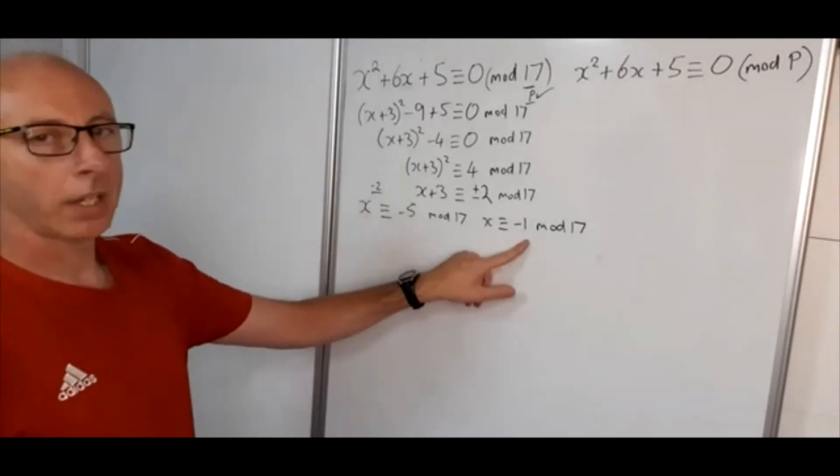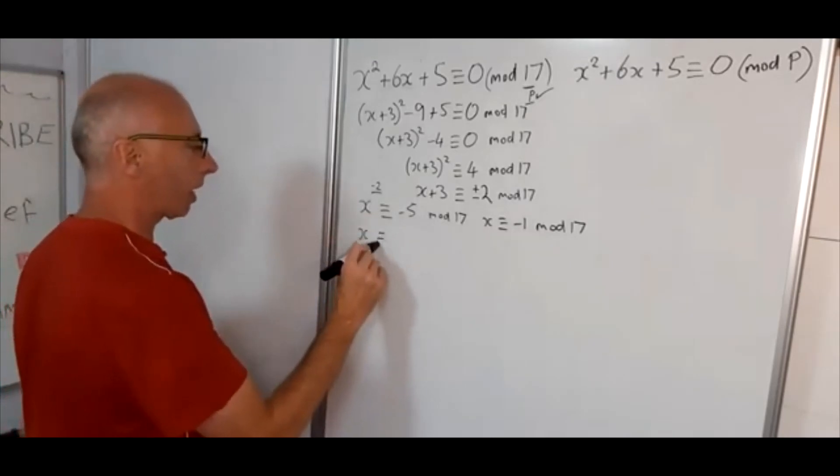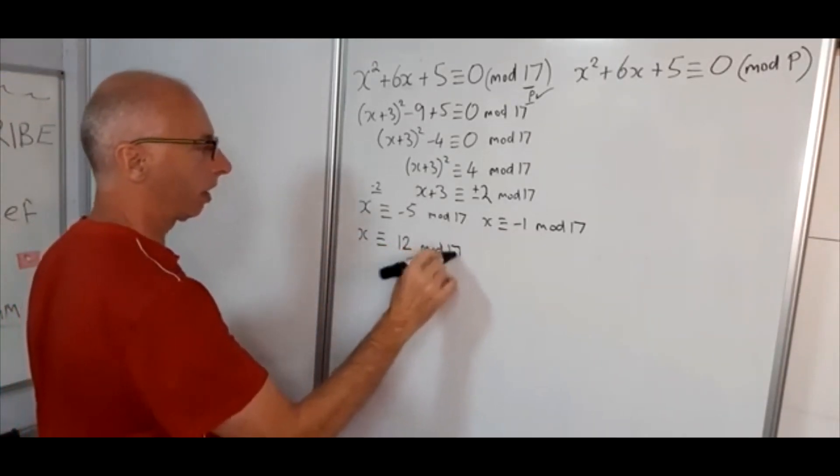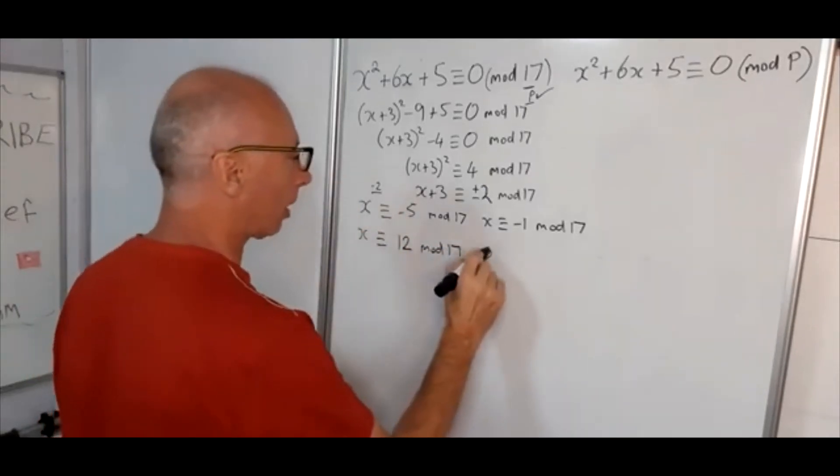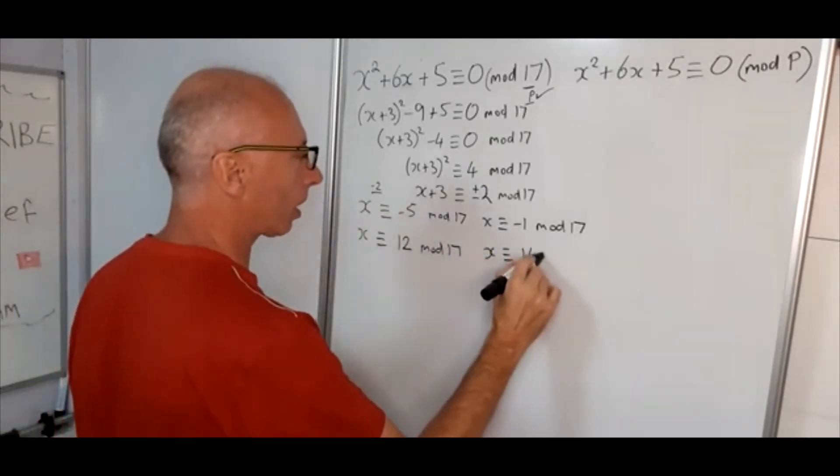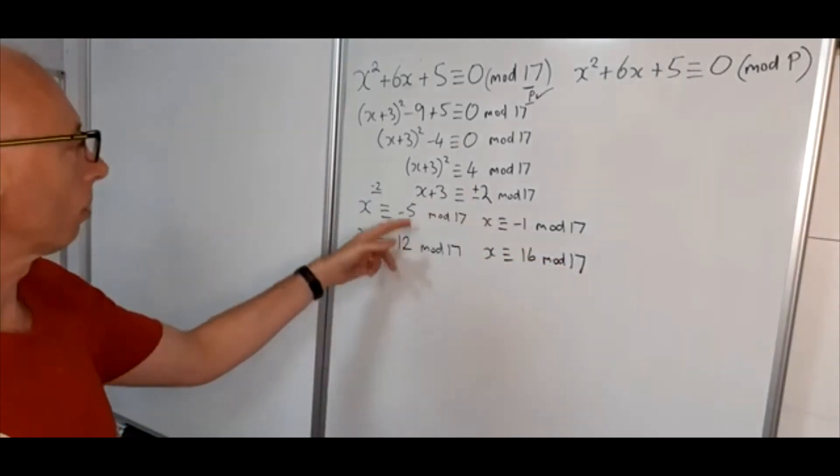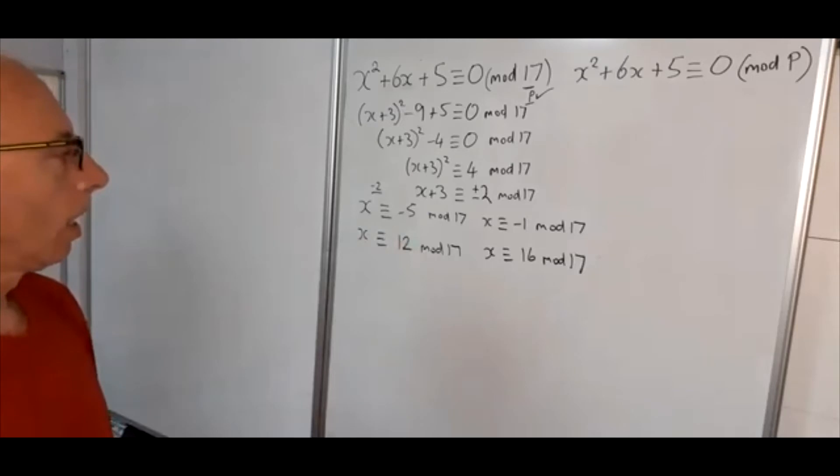So with these minus numbers we can just change them off a little bit. We've got x is congruent with 12 mod 17. That is the same. And here we've got x is congruent with 16 mod 17. Okay, so these numbers are all congruent.